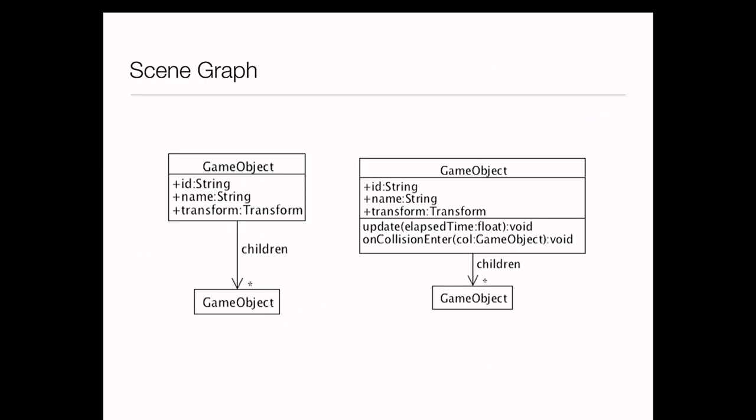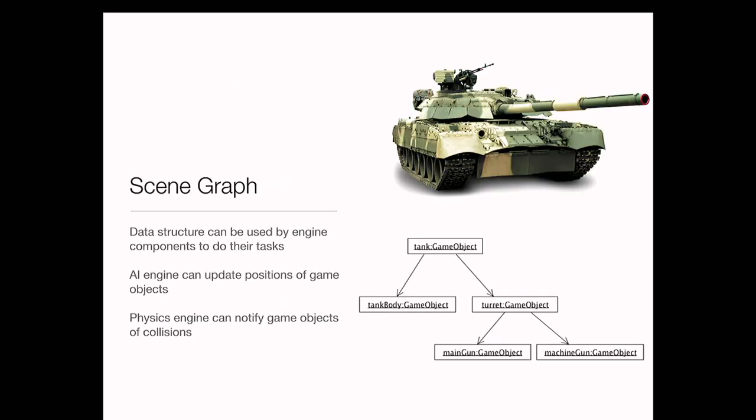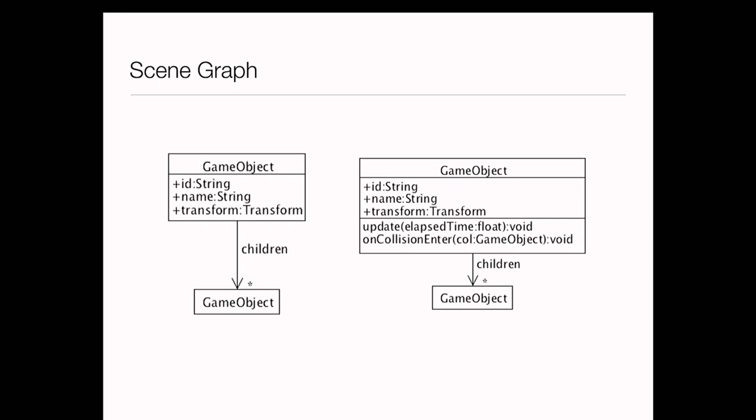Here's a UML diagram of a simple scene graph. Every game object carries with it some sort of geometrical transform, and every game object has zero or more children. When you call the update method on a game object, whatever transformation happens gets applied to all child objects. When you call update on child objects, whatever transform applies to the child applies to all of the children's children, and so on. If the tank collides with something, that collision also applies to all of its children, and all of the children's children.